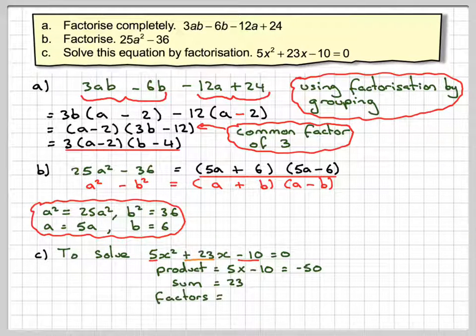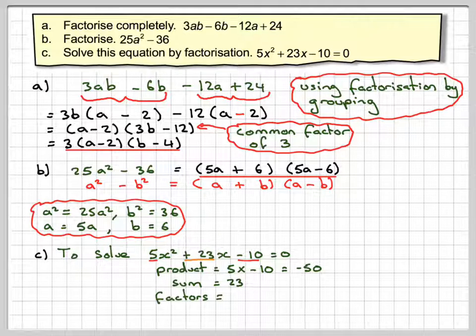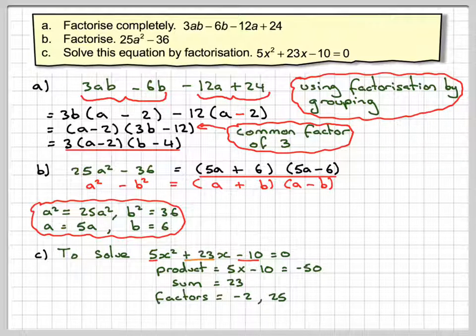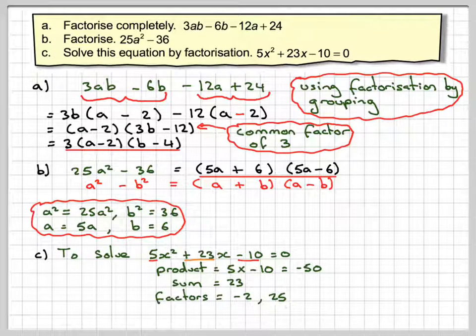The factors of that are going to be, now you want two numbers, when you multiply you get minus 50, and when you add the same number you get 23. So that's going to obviously be something like 2 and 25. One will have to be negative, and one will have to be positive. So let's try minus 2 and 25.